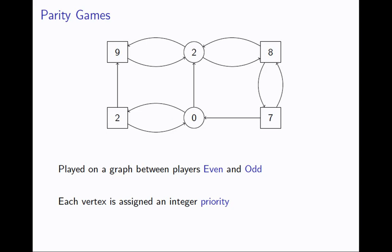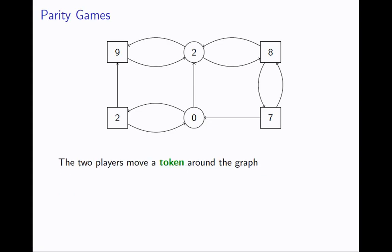A parity game is a finite graph with two players corresponding to two different types of vertices. The box vertices belong to a player called even, the circle vertices belong to a player called odd, and every vertex is assigned an integer priority. You play by placing a token on some vertex, and whoever owns that vertex gets to push the token along one of the outgoing edges to a different vertex — here player even moves it to the middle node.